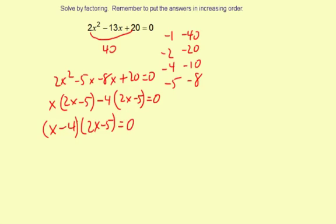So now it's factored, we're going to go ahead and solve. Zero product property. x minus 4 equals 0. And 2x minus 5 equals 0.